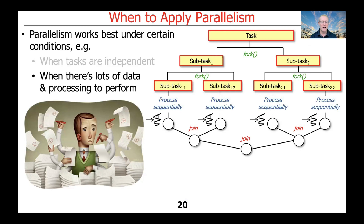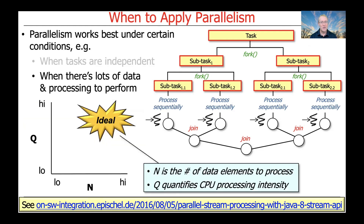Another condition under which parallelism works well is when there's lots of data and lots of processing to perform in parallel. There's a model called the N times Q model, where N is the number of data elements to process and Q is a quantification of the CPU processing intensity. If N gets big, meaning there are more items, and Q gets big, meaning there's a lot of CPU processing per item, that's the ideal situation for parallelism. In contrast, if you have a small number of items and each item takes very little time to process, then parallel computing may not work effectively.